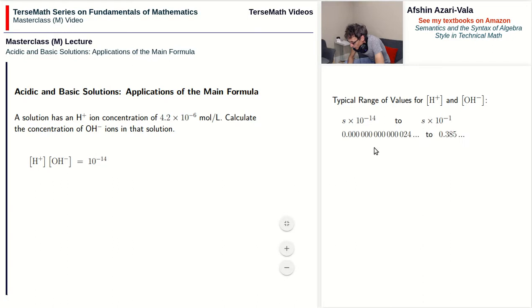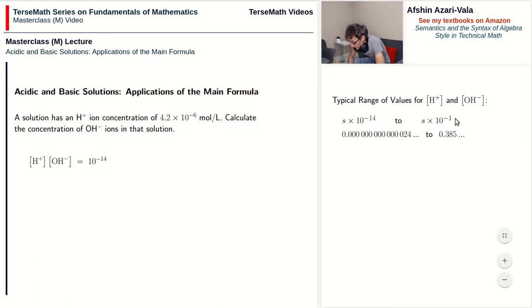As an example, if S is 2.4, multiplying by 10 to the power of negative 14 gives an extremely small value. All the way up to if S is 3.85, multiplying by 10 to the power of negative 1 gives 0.385. So there is a huge range, and you should expect an exponent somewhere between negative 14 and negative 1.